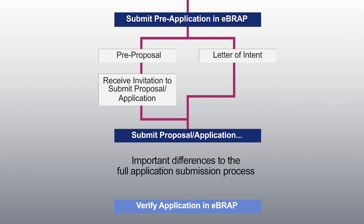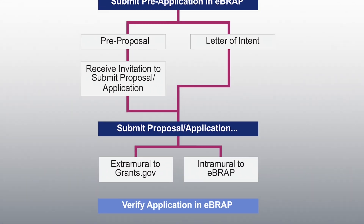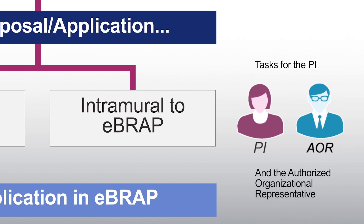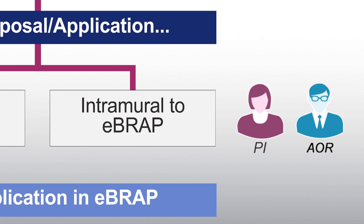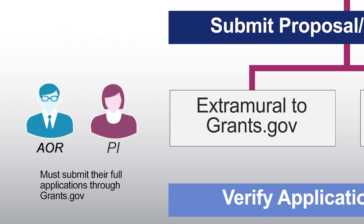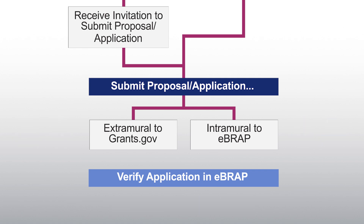There are important differences in the full application submission process for PIs from intramural DOD organizations versus PIs from extramural organizations. PIs from intramural organizations may submit their full applications through eBRAP or Grants.gov, and there are tasks for both the PI and the authorized organizational representative, or equivalent intramural business official, that need to be completed for the full application submission to be successful. In contrast, PIs from extramural organizations must work with their authorized organizational representative, who submits the full application through Grants.gov. The extramural organization's AOR must be registered and authorized to submit applications on behalf of the organization. There is no competitive advantage for applications received through Grants.gov versus eBRAP.